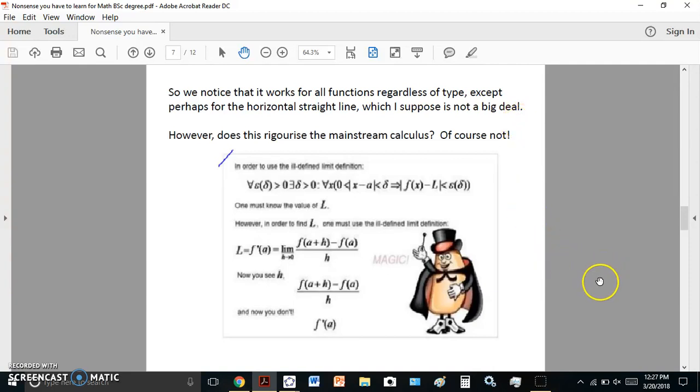But does this rigorize the mainstream calculus? Of course not. And this is the reason it doesn't. So now, some of you might think, oh well, I've written this down wrongly. No, I haven't. Delta and epsilon are functions of each other.